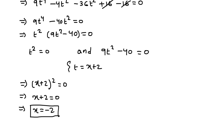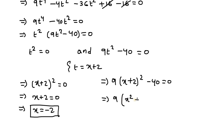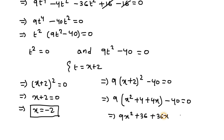For the second factor, putting t = x+2: 9(x+2)²-4 equals 0. Applying the formula (a+b)² = a²+2ab+b², we get 9(x²+4x+4) minus 4 equals 0, which gives 9x²+36x+36-4 equals 0, so 9x²+36x+32 equals 0.